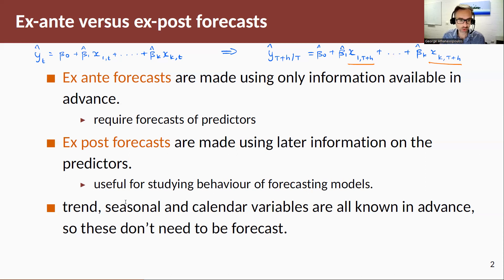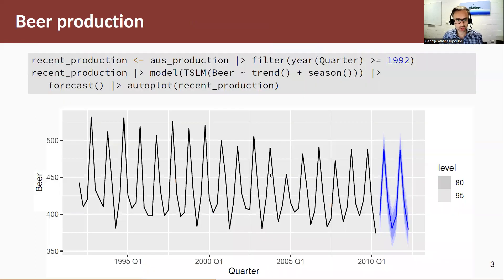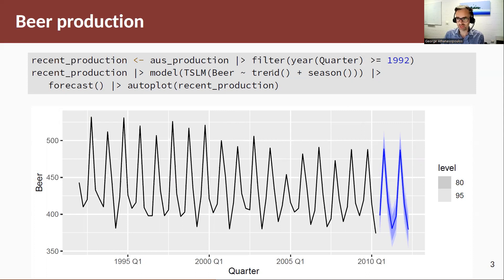Now if my predictors include things such as trend, seasonal, or calendar variables, then these are known with certainty — I don't have to know these in advance, so they don't need to be forecast and are easy to use. The first example we're going to show uses these. We'll grab beer production from the Oz production dataset and model it using a trend and seasonal dummies. We then pass this model into the forecast function, and automatically the forecast function generates forecasts without needing to be told what the trend and season are in the future. This is one of the nice features of the TSLM function, which is very helpful for estimating regression models and using them for forecasting time series data.